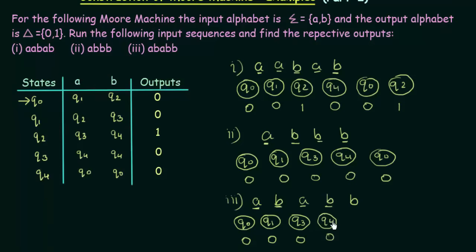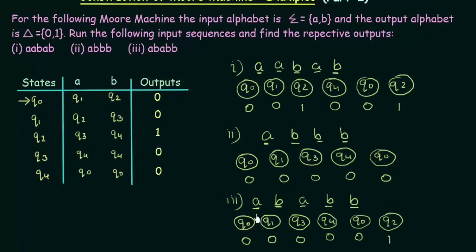The next input is B and we are in Q4. Q4 on input B goes to Q0, and Q0 produces the output 0. Then the next input is B and we are in Q0. Q0 on input B goes to Q2, and Q2 produces the output 1. So for the input sequence A, B, A, B, B, the output we get is 0, 0, 0, 0, 0, 1.